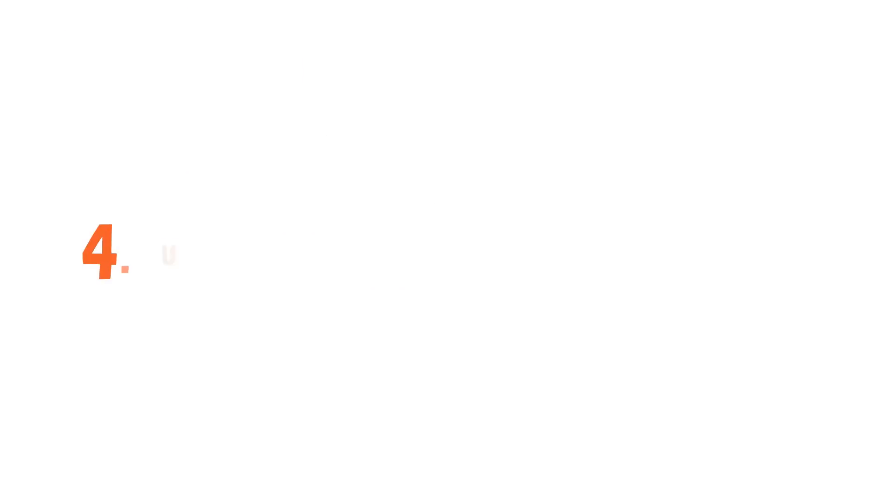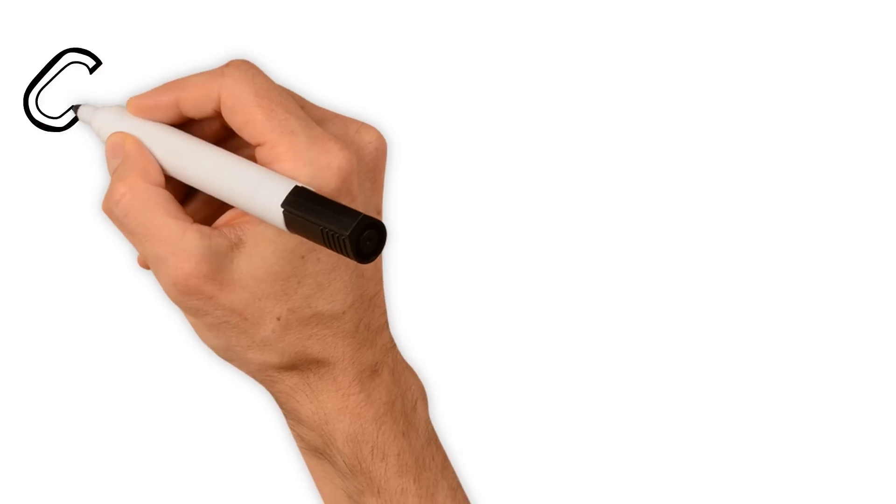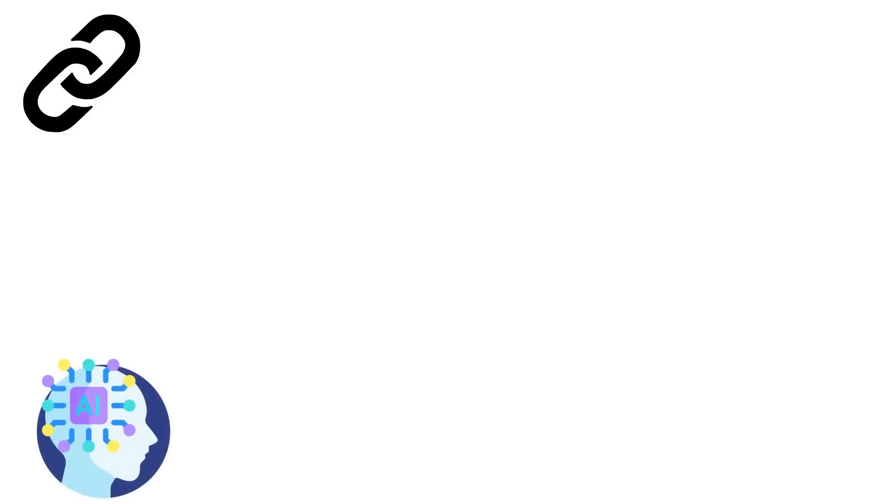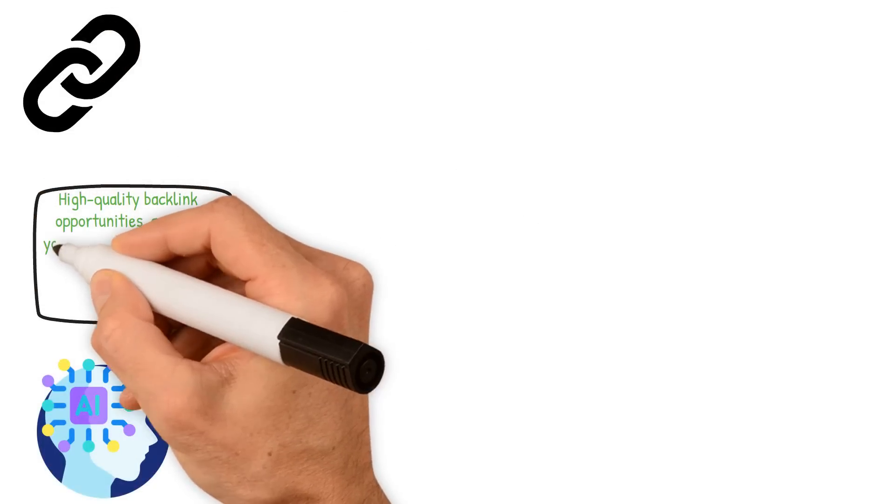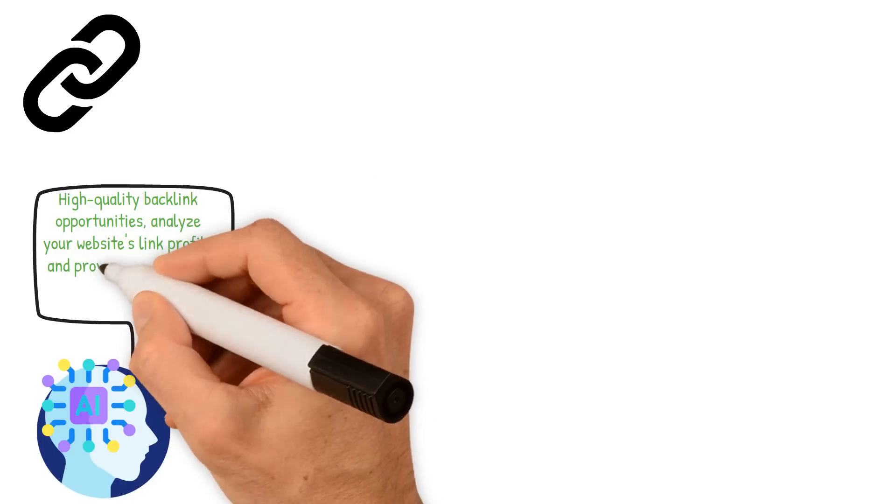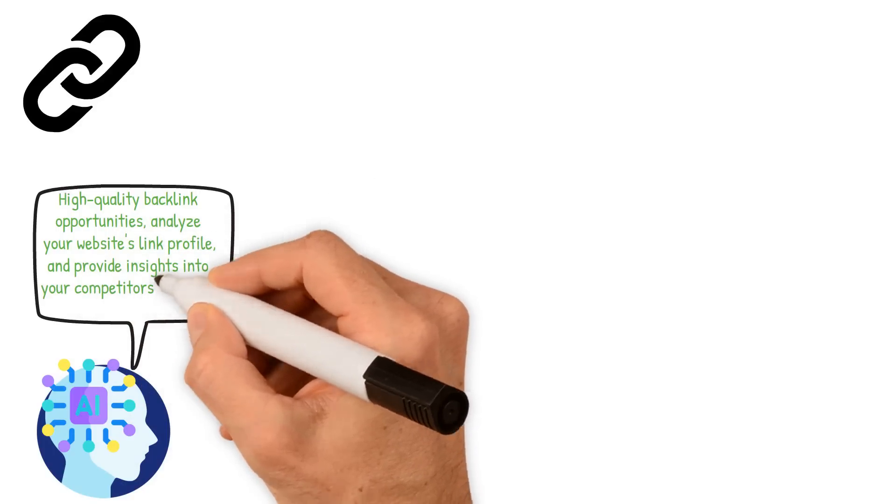Use AI for Link Building. Link building is a crucial component of any successful SEO strategy. AI-powered tools can help identify high-quality backlink opportunities, analyze your website's link profile, and provide insights into your competitors' backlink strategies.